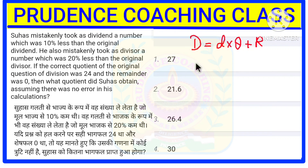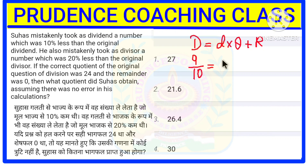Let us go through the question. It is given that Suhas mistakenly took as dividend a number which is ten percent less than the original dividend. Ten percent means one by ten, so if the original dividend is ten, then ten minus one gives nine by ten. He also mistakenly took as divisor a number which is twenty percent less than the original divisor. Twenty percent means one by five, so if the original divisor was five, then five minus one gives four by five.